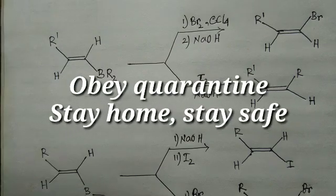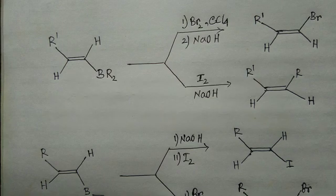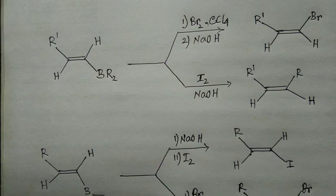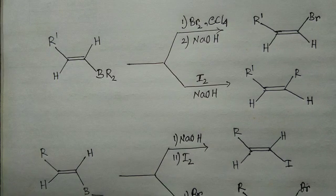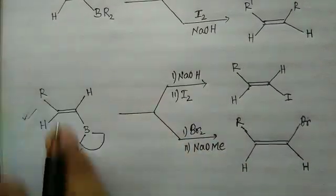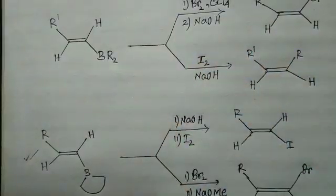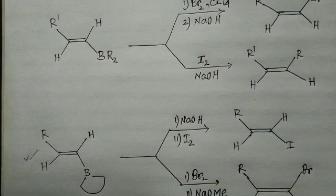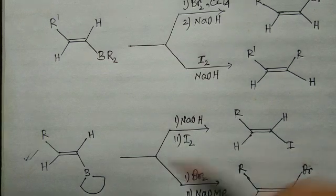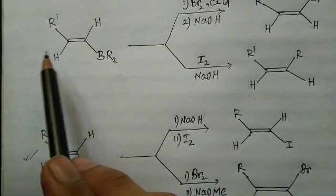Let us discuss these two problems on halogenation of vinylic boronic reagents. This is a very important concept because questions come from this topic. The second question is actually from the GATE exam. All four reactions are related, which is why I am discussing them together. The initial steps of both reactions involve the hydroboration reaction.